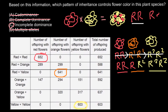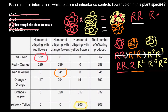In incomplete dominance, when we cross a red color plant with a yellow flower plant, we get blending in the progeny between red and yellow. The color of the progeny is completely different — somewhere in the middle, a blend of these two colors. As you can see, we get orange, and this is exactly what we observe here.